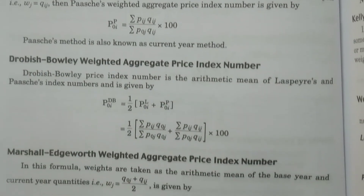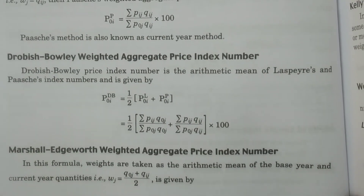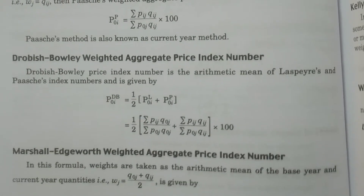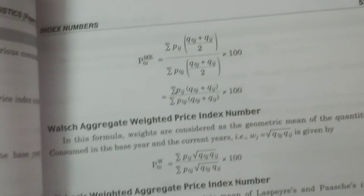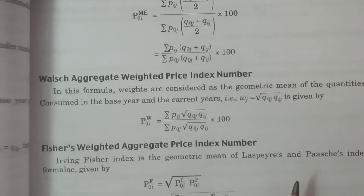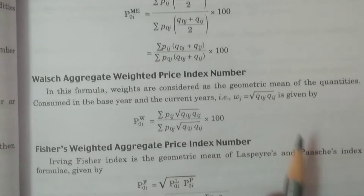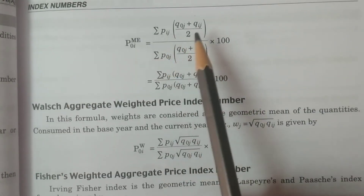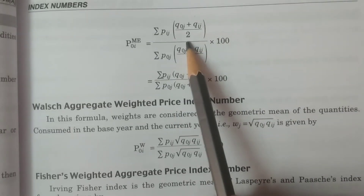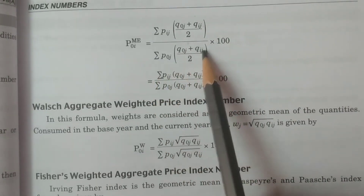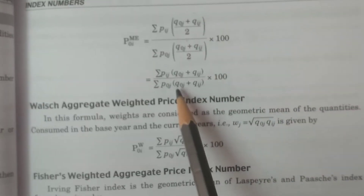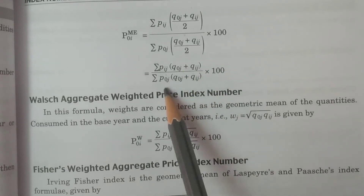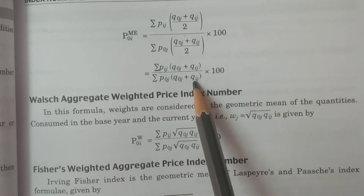Marshall-Edgeworth considered WJ = (Q0J + QIJ)/2, the average of base year and current year quantities. The formula is: P0I(ME) = summation PIJ·(Q0J + QIJ) divided by summation P0J·(Q0J + QIJ) into 100.